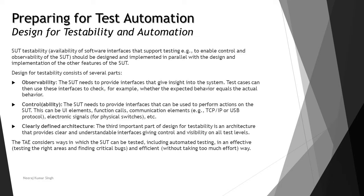Controllability generally means that the SUT needs to provide an interface that can be used to perform actions on the SUT — that means the backend supporting properties. The properties must be unique to clearly identify an object; if they are not unique enough, it would be difficult to identify an object and perform the activity. The third important part is clearly defined architecture, which gives the control flow for moving from one object to another. If it is not connected well, there would be a lot of challenges.